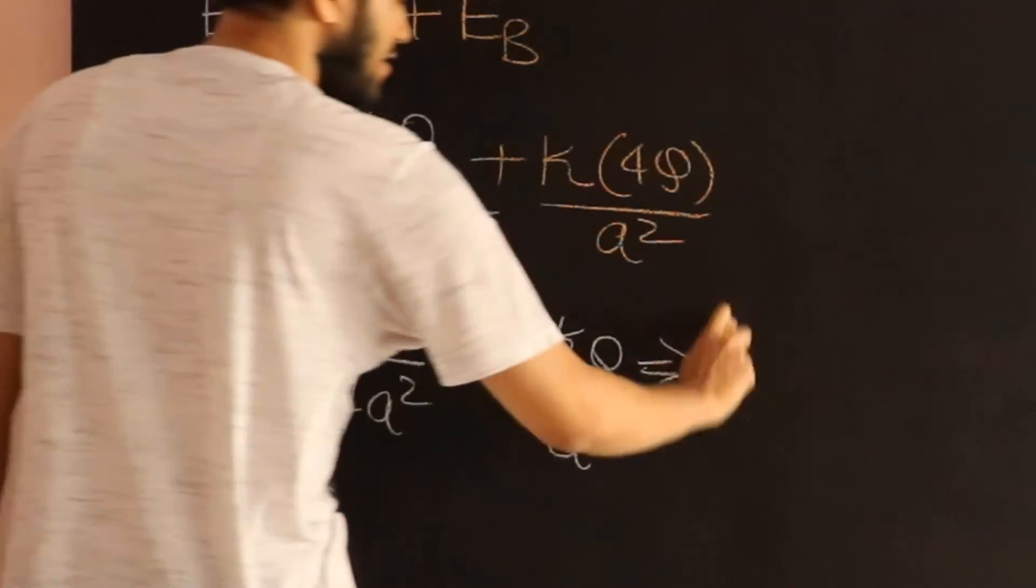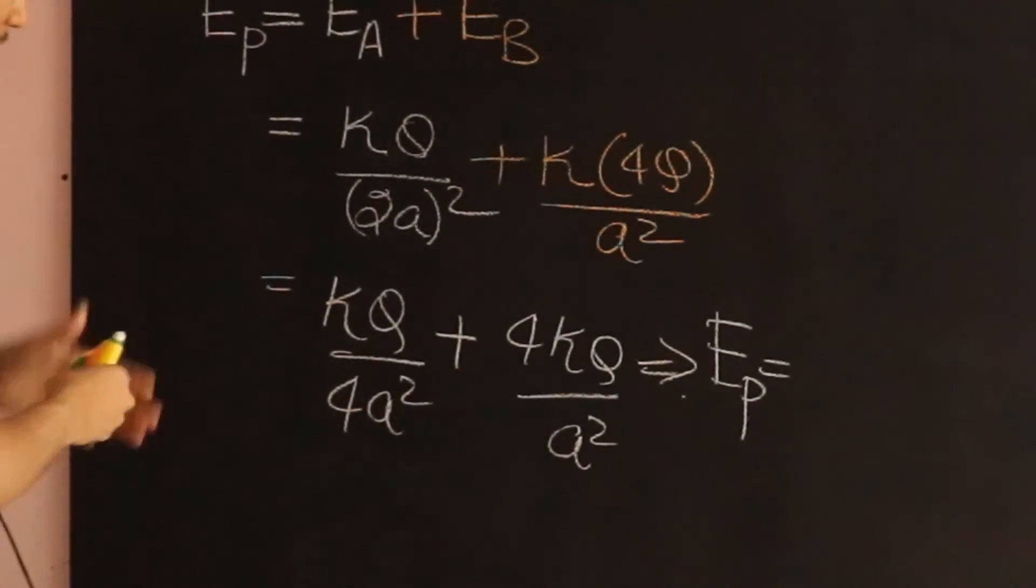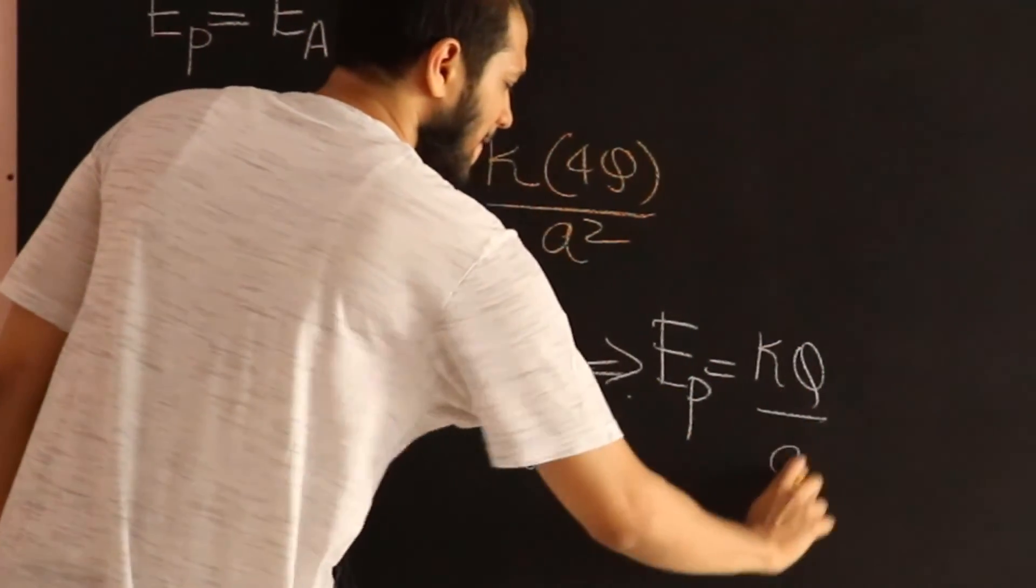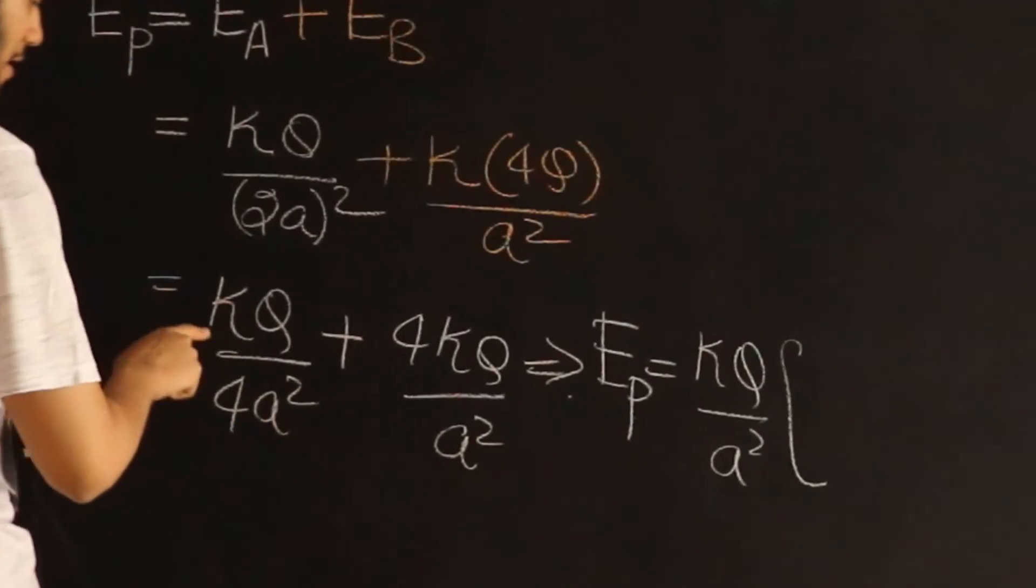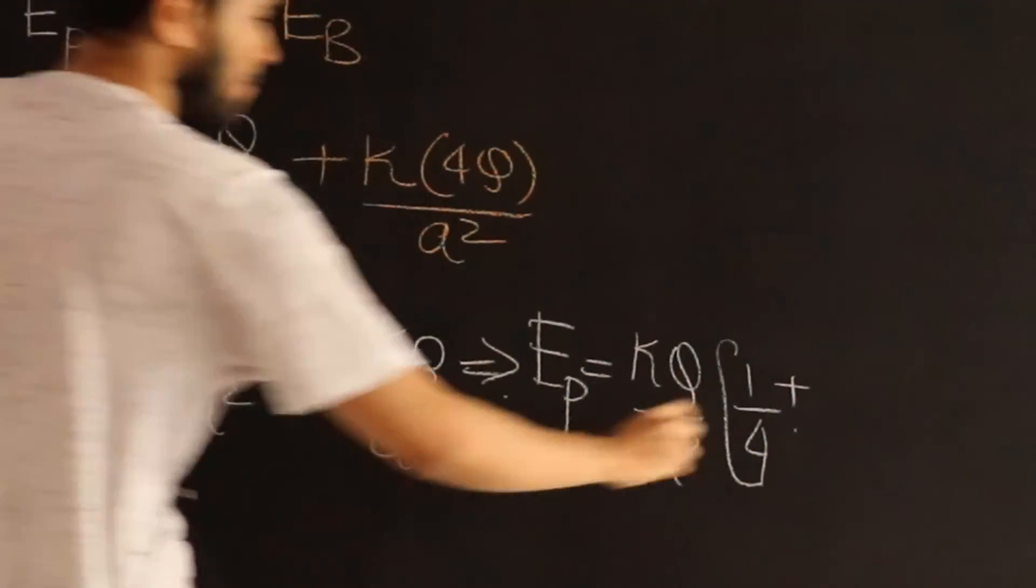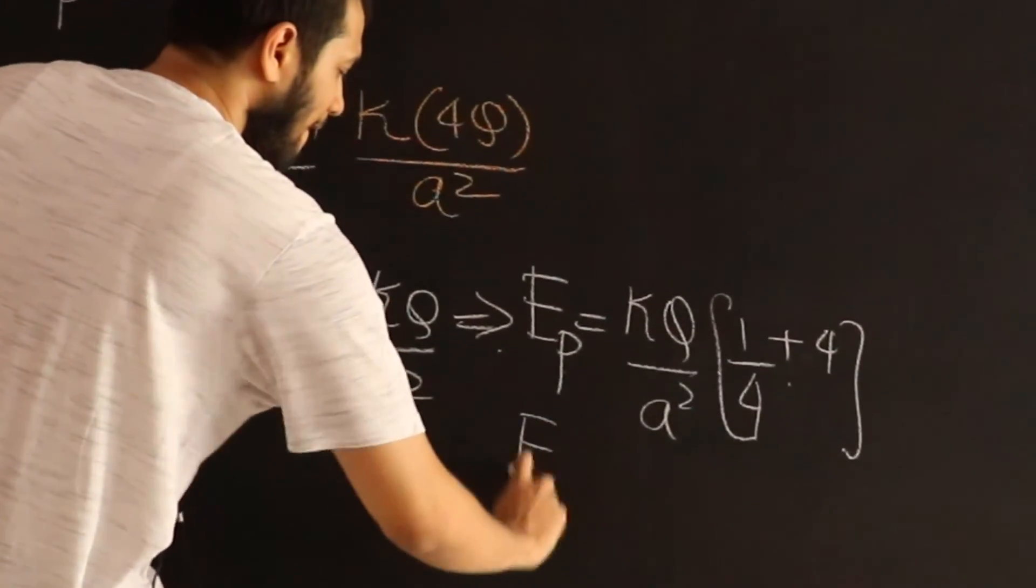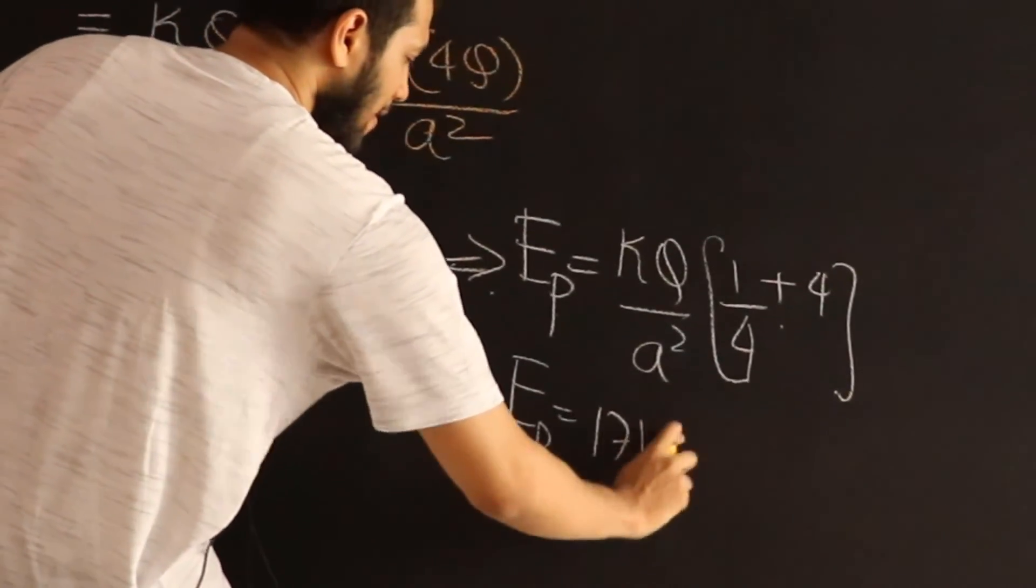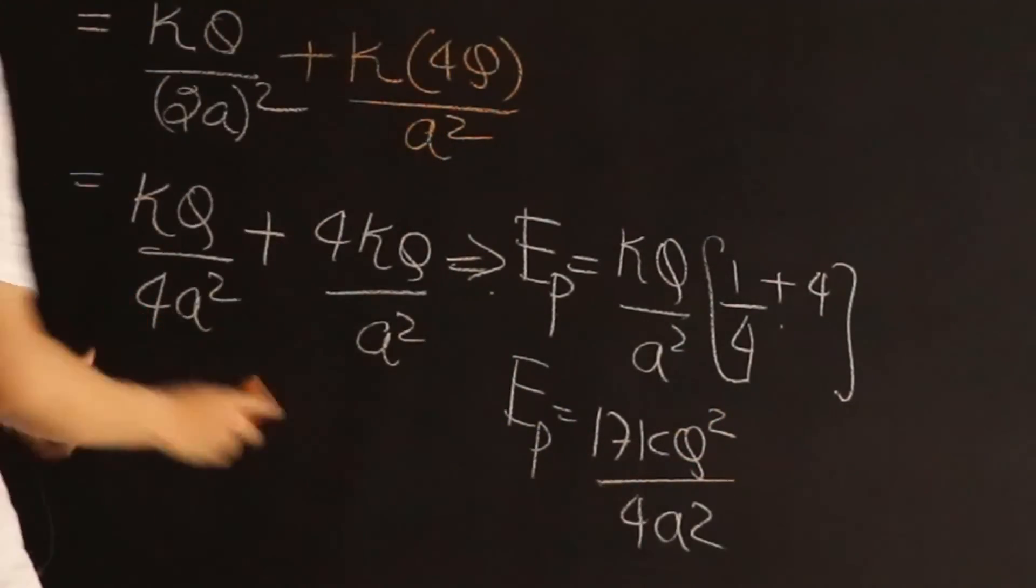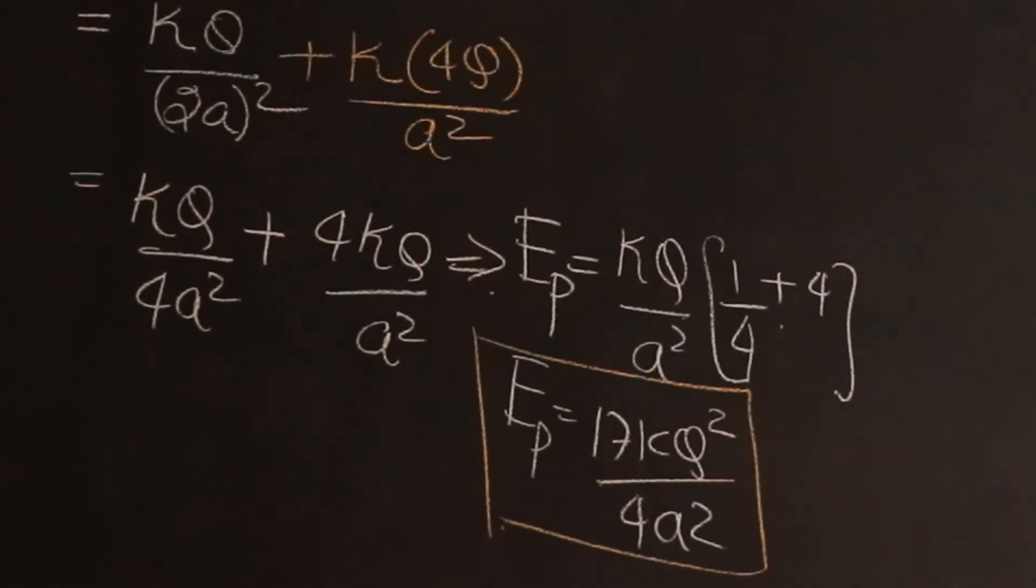That gives us the electric field at P to be equal to, let's see, we can take KQ by A squared common, and we get 1 over 4 plus 4. That is 17 KQ squared by 4A squared. And that's the answer.